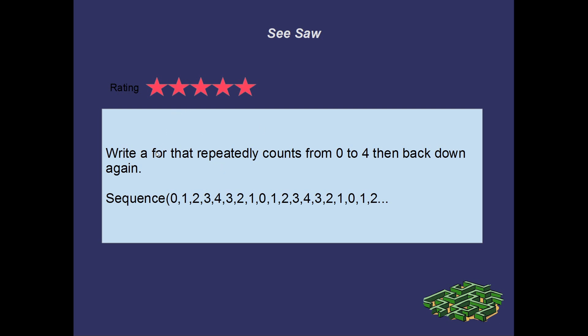Anyway, Seesaw is a 5 star problem because I found it really, really tricky. I want you to write a for-loop that continuously counts from 0 to 4, then back down again. So this is the pattern you're looking for. 0, 1, 2, 3, 4, 3, 2, 1, 0. 1, 2, 3, 4, 3, 2, 1, 0. I think you can see why it's called the Seesaw. Yeah, it's a tricky puzzle.